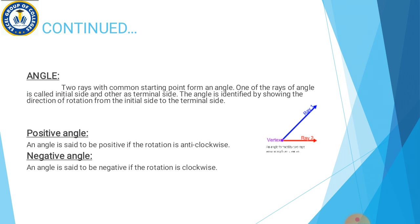Jaise ke figure mein show kiya gaya hai, aap ke paas ray 1 hai blue color mein, ray 2 hai red color mein. Yeh ek common starting point share kar rahe hain jise humne vertex ka naam diya purple color mein. Ek ray ko hum terminal side kahenge aur doosri ko hum initial side kahenge. Basically angle ko hum uski direction of rotation se identify karte hain.